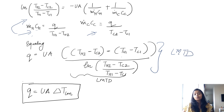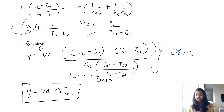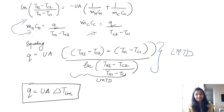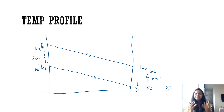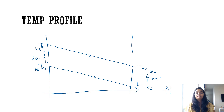This is what we call the log mean temperature difference. Based on this derivation, Q is equal to UA times delta Tm. You can now understand that since the temperature difference is changing at each point in the heat exchanger, the best approximation is done through log mean temperature difference, and this derivation also proves the same thing.